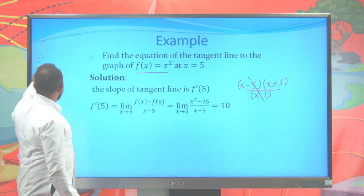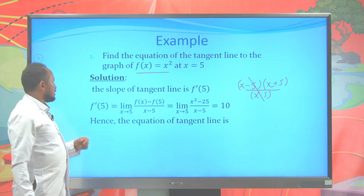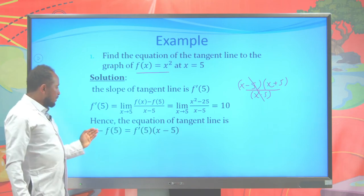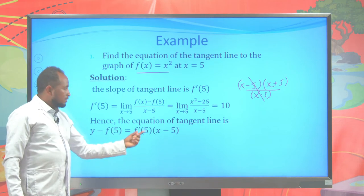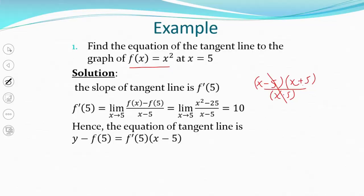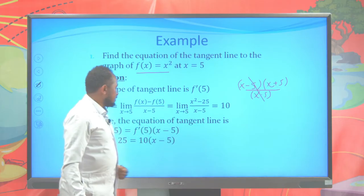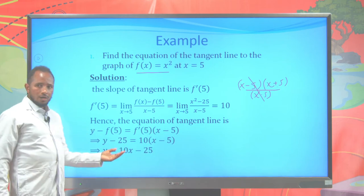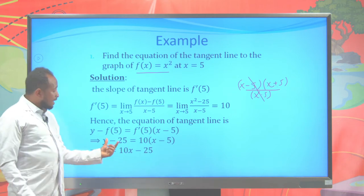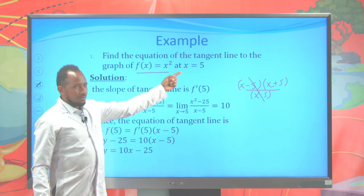Once we have found the slope, we can write the equation using the formula. It is y minus f of A, our A is 5 here, y minus f of 5, equals the slope f prime of 5 times x minus 5. Putting in the results: y minus 25 equals 10 times x minus 5. Therefore when you simplify, you get y equals 10 times x minus 5. This is the tangent line equation for this graph at x equal to 5.